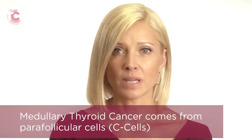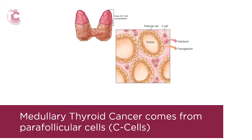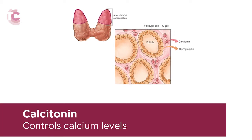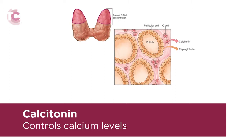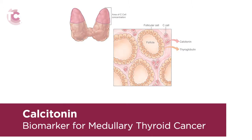The other two types of thyroid cancer, medullary and anaplastic, cannot be treated with radioactive iodine and TSH suppression. Medullary thyroid cancer arises from different cells in the thyroid gland called parafollicular cells, or C-cells. Instead of making thyroid hormone, they make another hormone called calcitonin, which controls calcium levels in the blood. In this form of thyroid cancer, calcitonin is a useful biomarker that allows physicians to monitor for recurrence of disease.